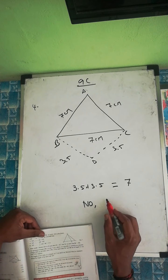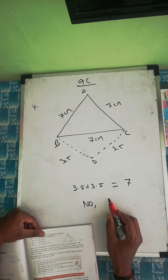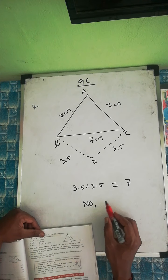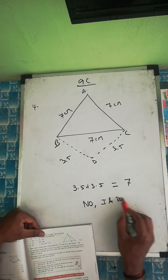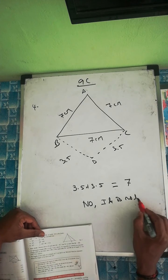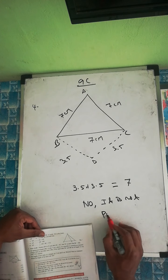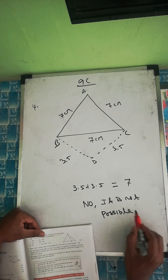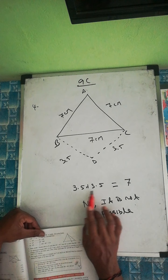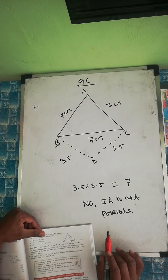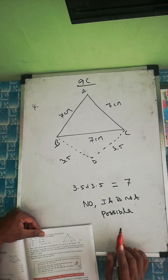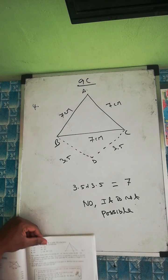Since 3.5 plus 3.5 equals 7 and is not strictly greater than 7, the answer is no — it is not possible to draw this isosceles triangle. The sum of the two equal sides must be strictly greater than the third side.